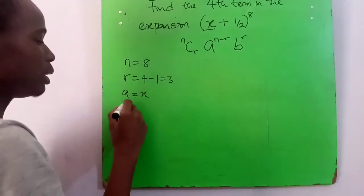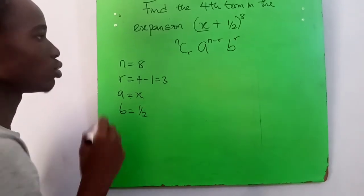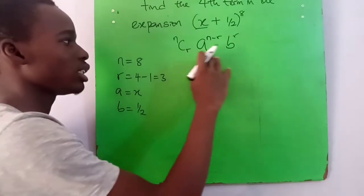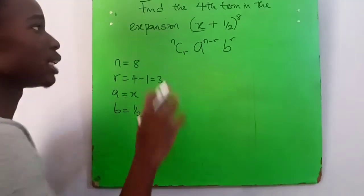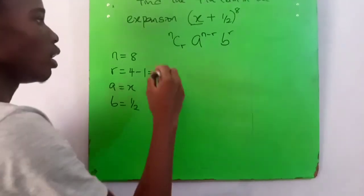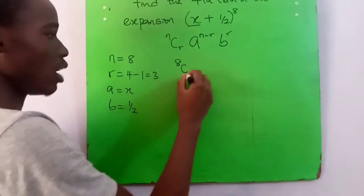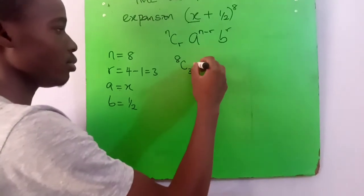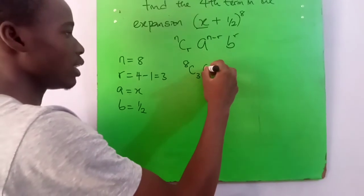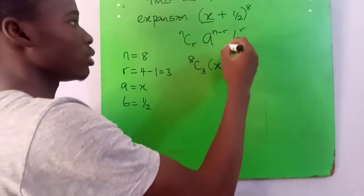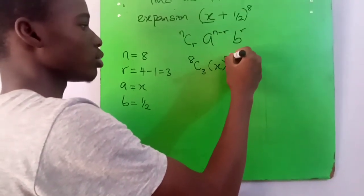Now substitute it into this to get the fourth term. n, our n is 8, combination r which is 3. Then a, our a is x, raised to the power n minus r, 8 minus 3. Then we have b, one over two, raised to the power of r, which is three.